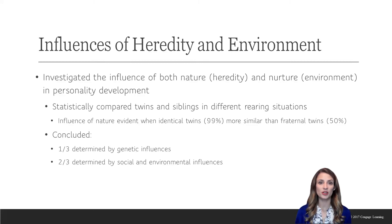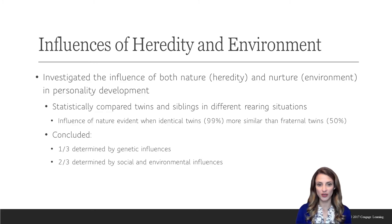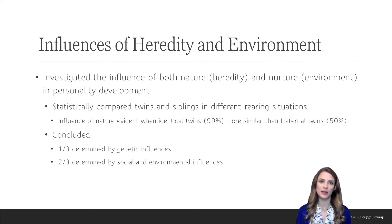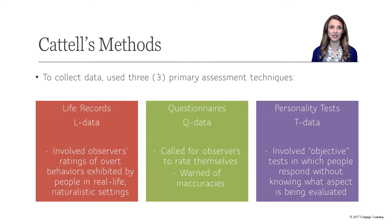Some early personality theories highlighted the importance of both nature and nurture. Cattell investigated the relationship between nature and personality. He studied identical twins and fraternal twins in different rearing situations. The influence of nature was evident because identical twins, who share nearly 100% of their DNA, were more similar across personality dimensions. Based on his twin study results, he concluded that a third of our personality is influenced by genetic factors, while two-thirds was influenced by social factors. To collect data, Cattell used three different methods: L-data, Q-data, and T-data.